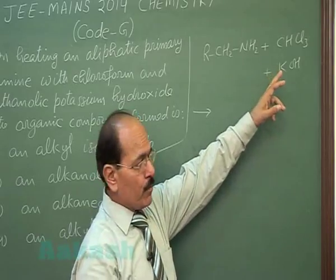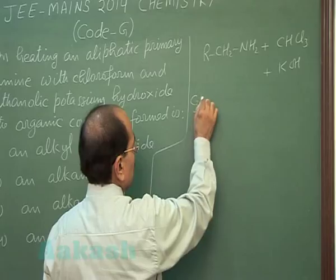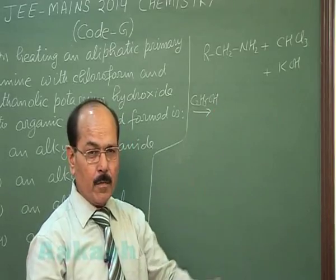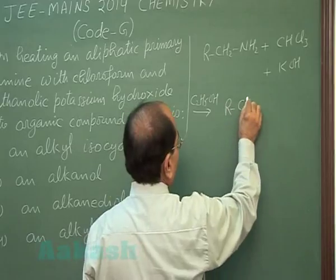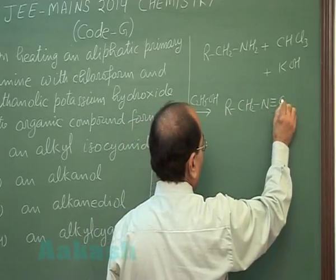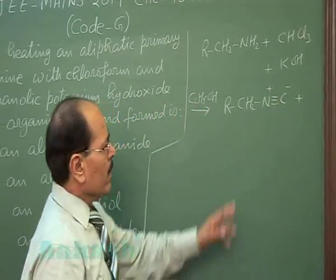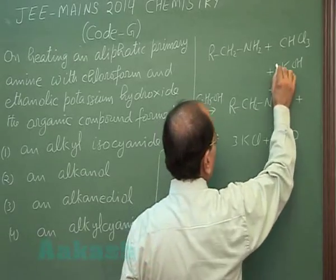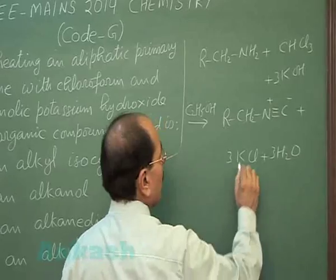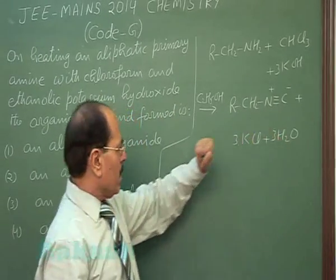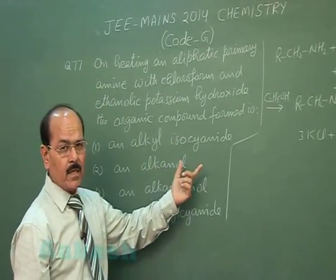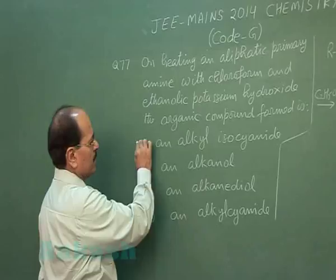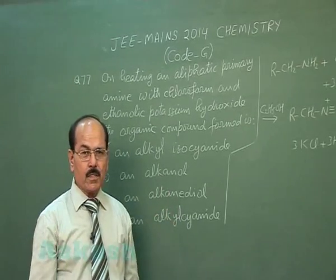Aliphatic primary amine reacts with chloroform and KOH dissolved in ethanol. The product formed is isocyanide, also known as carbylamine, along with KCl and water. The answer is an alkyl isocyanide — it is a foul smelling compound and it is a test of primary amines. So the correct answer is option one.